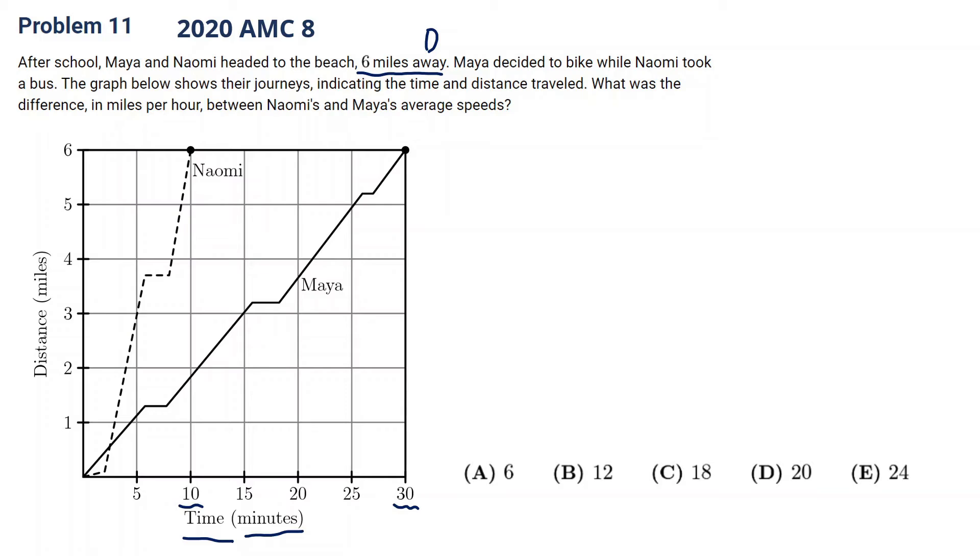What was the difference in miles per hour between their average speeds? So we have to find their average speed each and find their difference. And the unit is miles per hour, which means when we are calculating speed. So let's say Maya and then Naomi. For Maya, the distance is six, the distance in miles is six. And the time in hours, so Maya is 10 minutes, 10 minutes is the same as one-sixth hour. For Naomi,